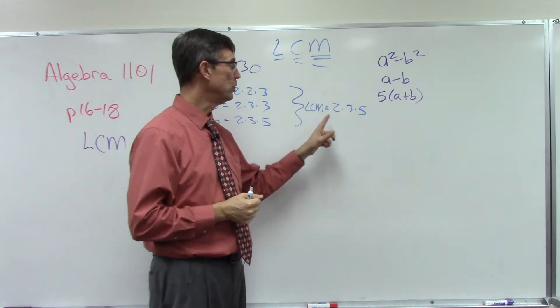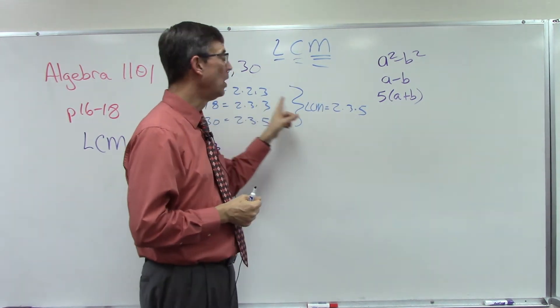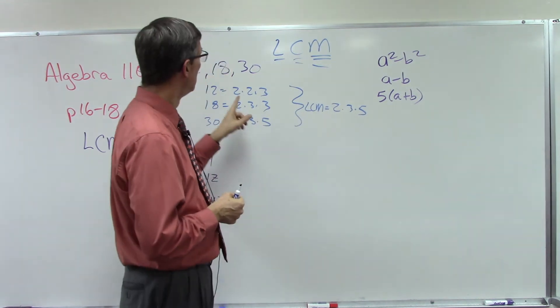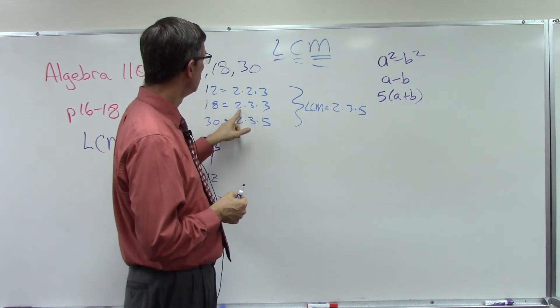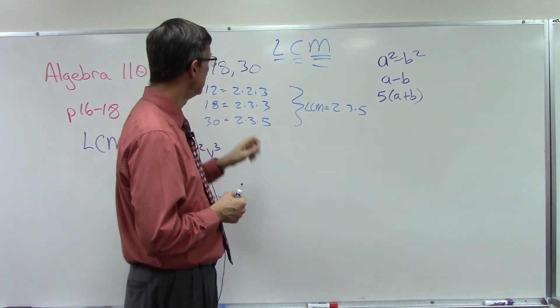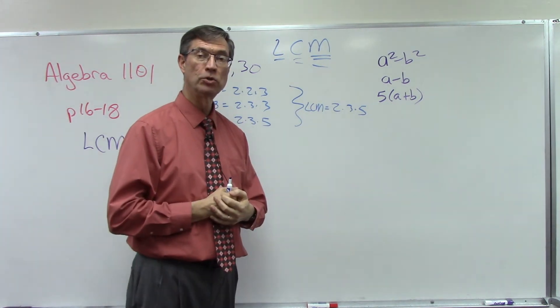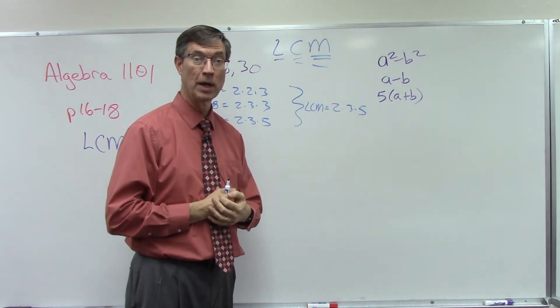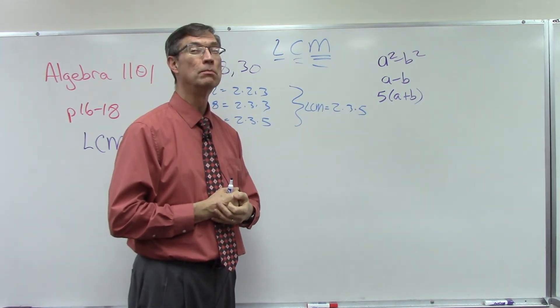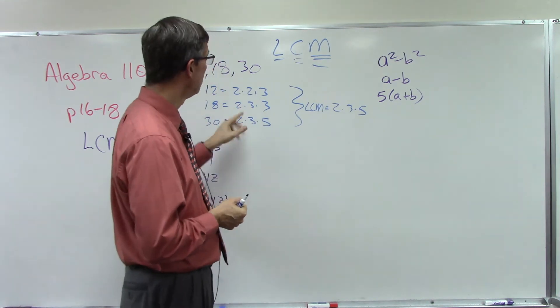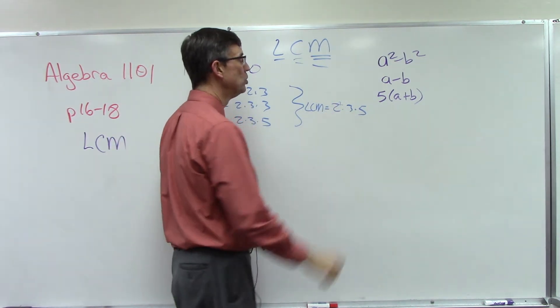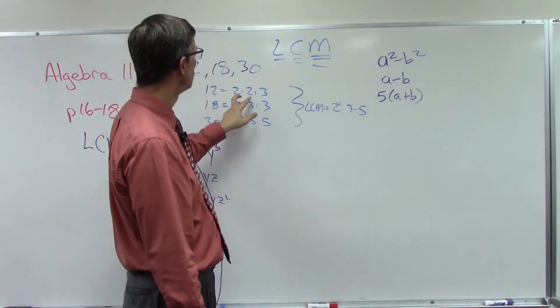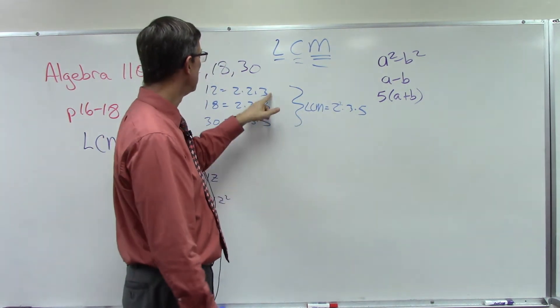Now I have to go back and look at what is the most number of times that the 2 is used in any one number. 2 is used twice here, once here, once here. So which is bigger? 2, 1, or 1? We're not going to use all of them, just the most that is used in any of them, and of course that is twice, so put an exponent of 2 there when you use 2 twice.